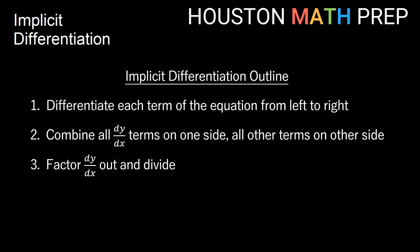So our general outline for implicit differentiation: differentiate every term of the equation from left to right all the way through. Remember that any time you get a y term and take the derivative of it, you'll get a dy/dx or y prime from the chain rule. Second, combine all your dy/dx or y prime terms on one side and all the other terms on the other side. Lastly, factor your dy/dx or y prime out and divide by what's left to get your answer. We have another video coming up on finding implicit second derivatives, so stick around. Thanks for watching!